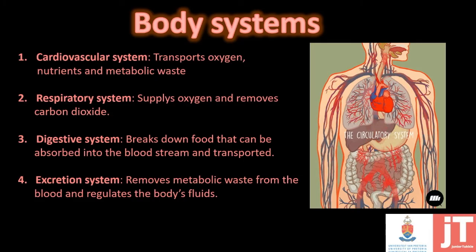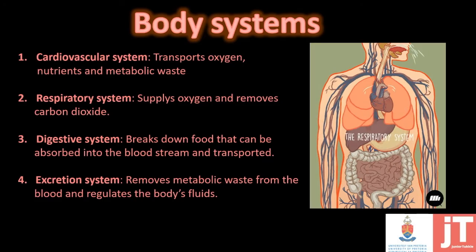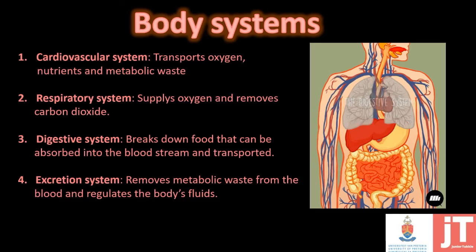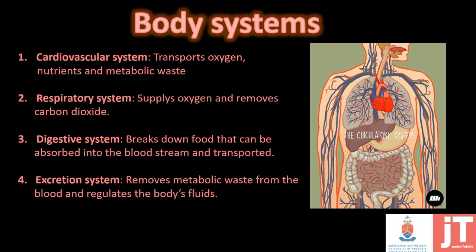Let's have a look at the different body systems, which we will do individually in my next few videos. We're going to start with the cardiovascular system, which transports oxygen, nutrients, and metabolic waste throughout the system. Then we have the breathing system, or respiratory system, which supplies oxygen and removes carbon dioxide. Then we have the digestive system, which breaks down food so it can be absorbed into the bloodstream and transported to every cell in the body.